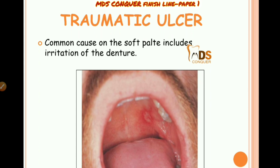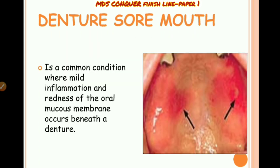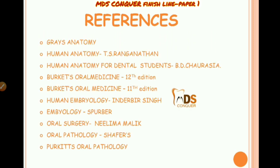Traumatic ulcers, traumatic burns, or thermal burns can be seen on the palate. Traumatic ulcers may occur due to denture irritation. Denture stomatitis types 1, 2, and 3 can also be seen on the palate. These are the various applied aspects covered in this video; you should select relevant ones when answering questions on development of the palate or muscles of the soft palate.